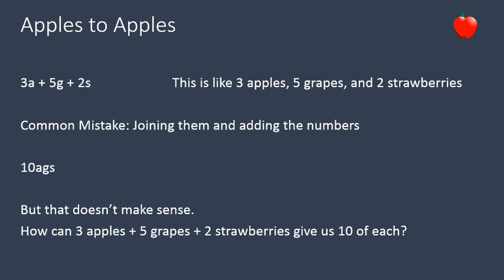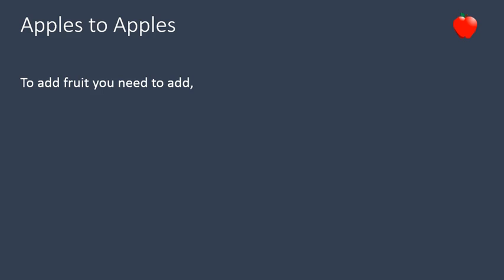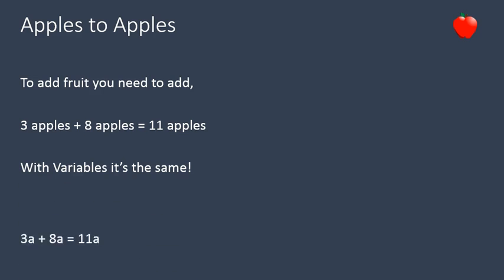When you have 3 apples, 5 grapes, and 2 strawberries, you can't just say you have 10 apple-grape-strawberries. You have to say you have 3 apples, 5 grapes, and 2 strawberries — you have to keep them separated. It's exactly the same thing with like terms and unlike terms. To add fruit, you need to add the same type. Does that make sense? 3 apples plus 8 apples equals 11 apples. Same with variables.